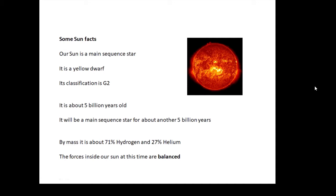By mass it's about 71 percent hydrogen, about 27 percent helium, and about a couple of percent other bits and pieces. The most important thing about our Sun at the moment is that it is balanced, it is stable.